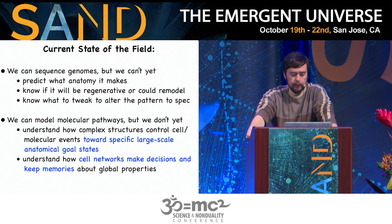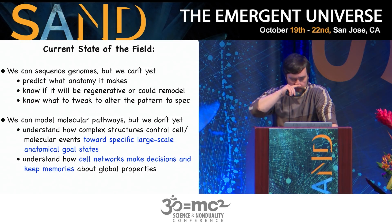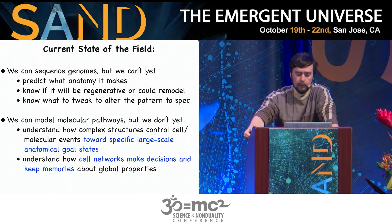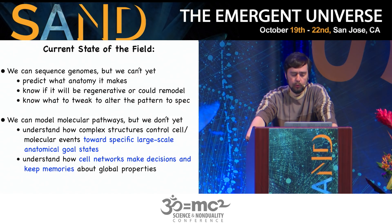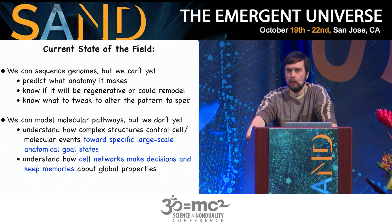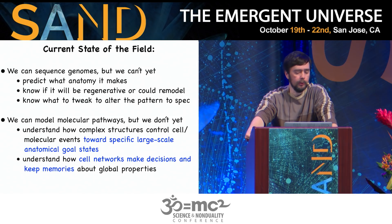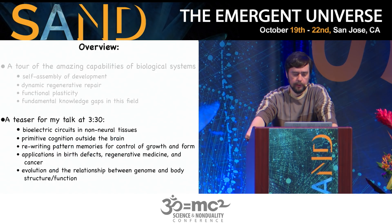What we really don't understand, even though we can model molecular pathways, is how complex structures control cellular and molecular events towards specific anatomical outcomes — this is top-down control. How cells and networks make decisions and how they keep memories about these global properties are things we are actively working on.